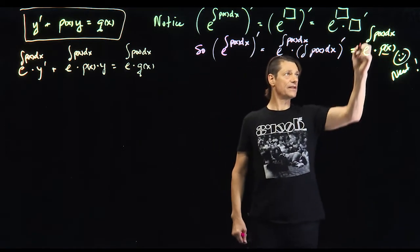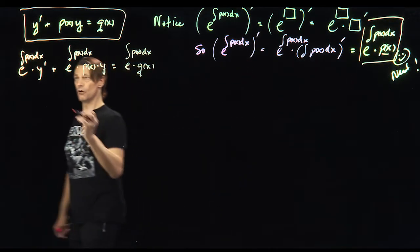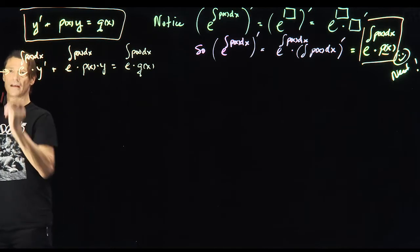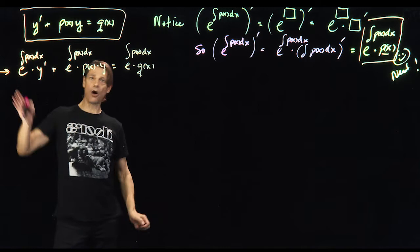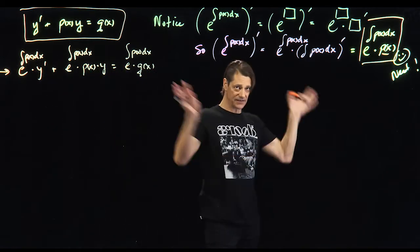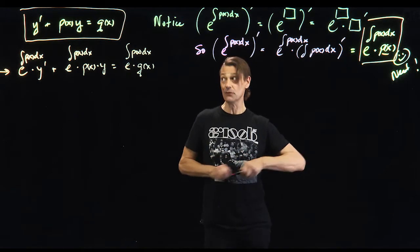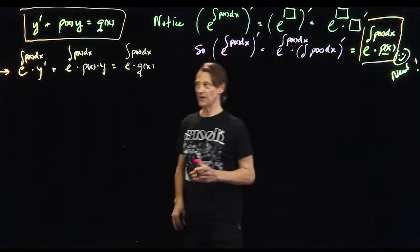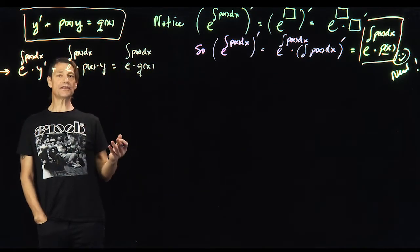So you'll notice that this is the derivative of this. So now here's the trick. We'll multiply everything by this e to the antiderivative of p of x dx, all the way across. We know it's not zero. E to the nothing is zero. I mean, there is no anything that e to it is zero. Not in real number theory anyway. And now you start to look at something.